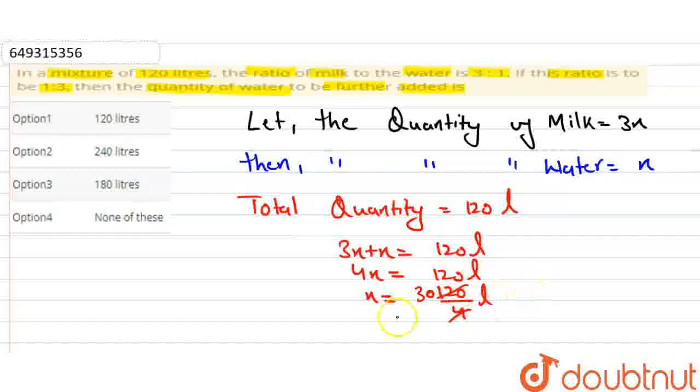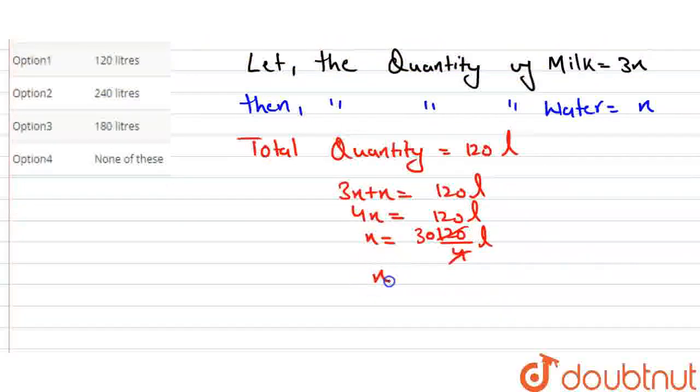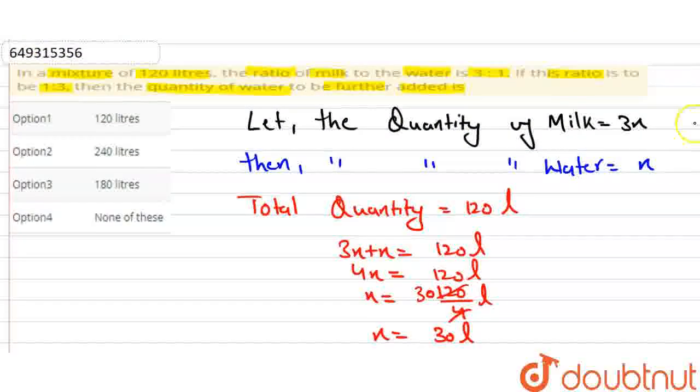So we can say that water is 30 liters and milk is 90 liters (30 times 3). Now we need to add water so that the ratio becomes 1:3.